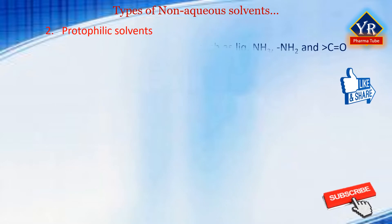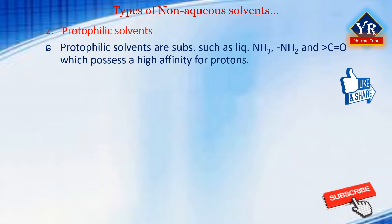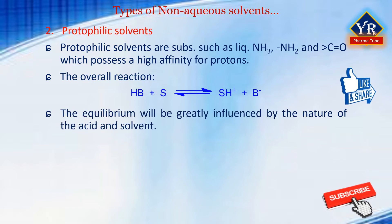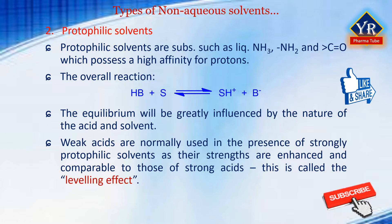Protophilic solvents are substances such as liquid ammonia, amines, and ketones which possess a high affinity for protons. The overall reaction taking place can be represented as shown in the equation here. The equilibrium in this reversible reaction will be greatly influenced by the nature of the acid and that of the solvent. Weak acids are normally used in the presence of strongly protophilic solvents as their acidic strengths are then enhanced and become comparable to those of strong acids. This is referred to as the leveling effect.